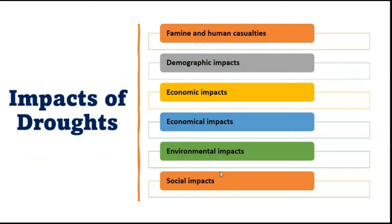Extensive prolonged drought in a country where the majority of people depend on subsistence farming results in shortage of water for irrigation and domestic purposes, and livestock, food, and fodder shortages. Consecutive famine conditions set in, and people die of malnutrition and starvation. Drought and heat-related diseases such as heat strokes, dehydration, high fever, and hyperthermia also occur. About 50 lakh people were killed by drought during 1921 to 1922 in the Soviet Union due to severe drought conditions.